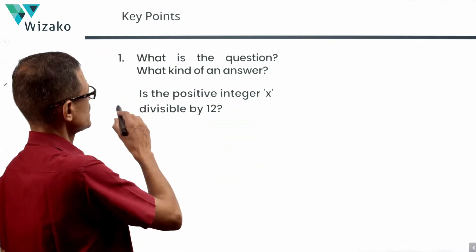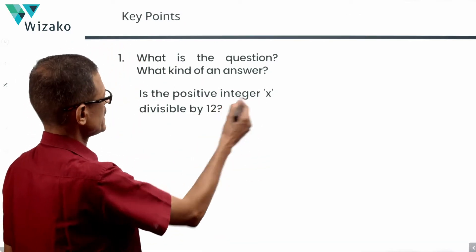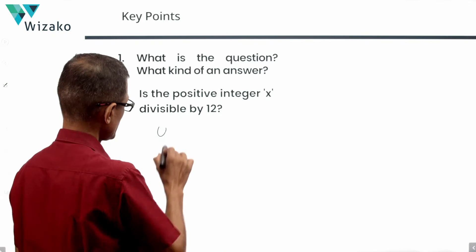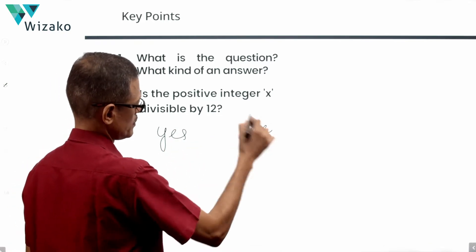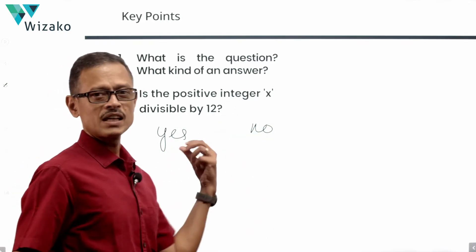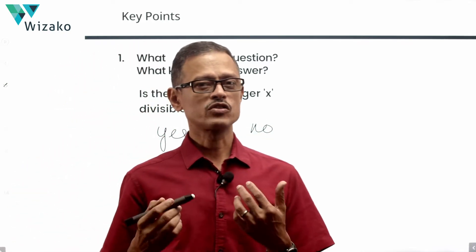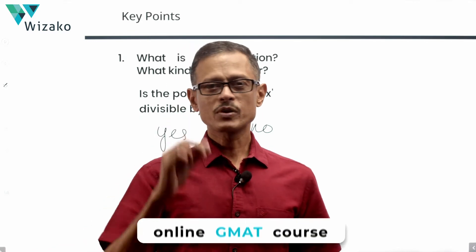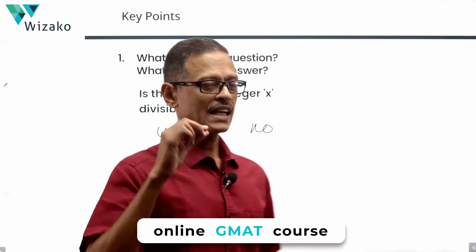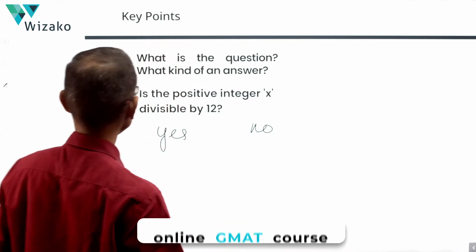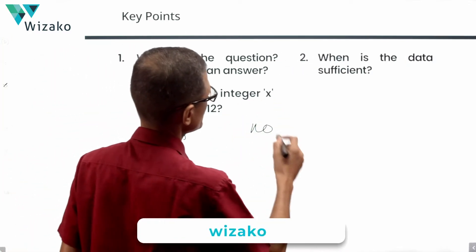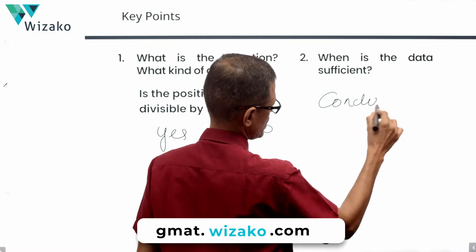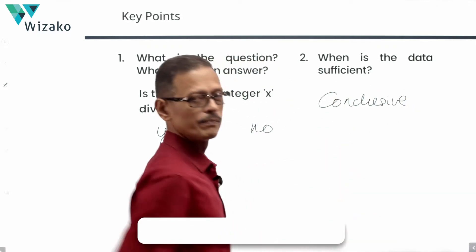Is the positive integer x divisible by 12? The answer is going to be a yes or a no — yes when the number is divisible by 12, and no when it is not. Before we proceed, let us get clarity on when the data is sufficient. The data is sufficient when we have a conclusive yes or a conclusive no.